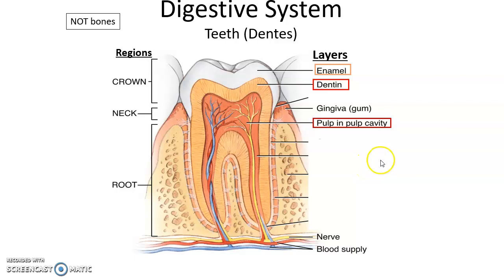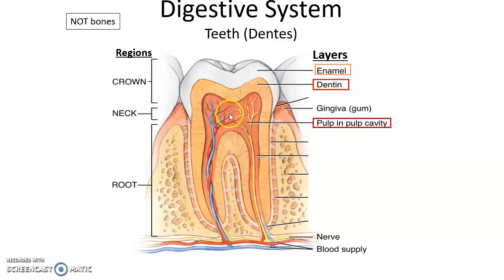You can also look at the tooth by layers. The most superficial layer is the enamel — the hardest substance produced by our body. Deep from that is the dentin, which makes up the bulk of the tooth by volume. And then deep to that is the pulp, the most living part of the tooth where we have nerves and blood vessels. When you have a toothache, it is the pulp in the pulp cavity that is experiencing the discomfort.